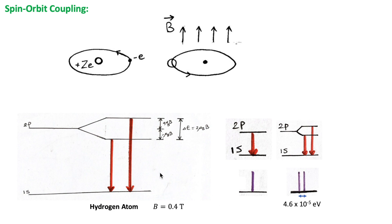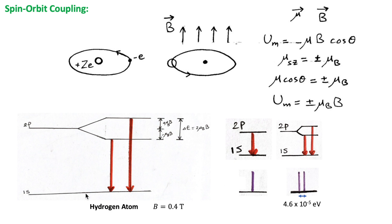This internal Zeeman effect is known as the fine structure doubling of spectral lines. In the hydrogen atom, the 2P state is split into two states because of spin-orbit coupling. So the transition from the 2P to the 1S state, which is expected to produce just one spectral line, actually produces two spectral lines that are very close together, because the 2P state is split into two states by spin-orbit coupling.